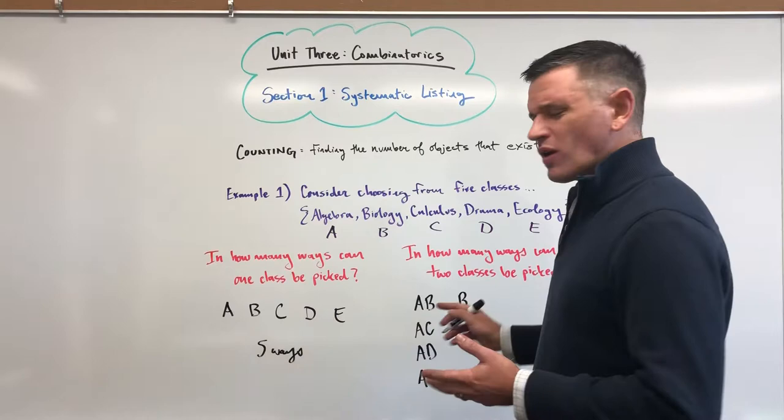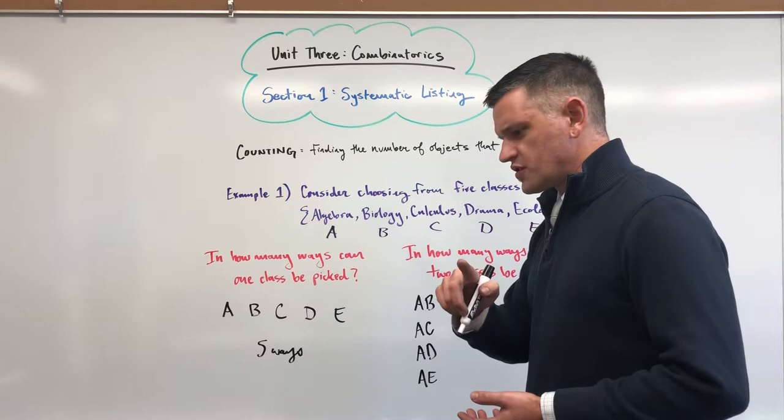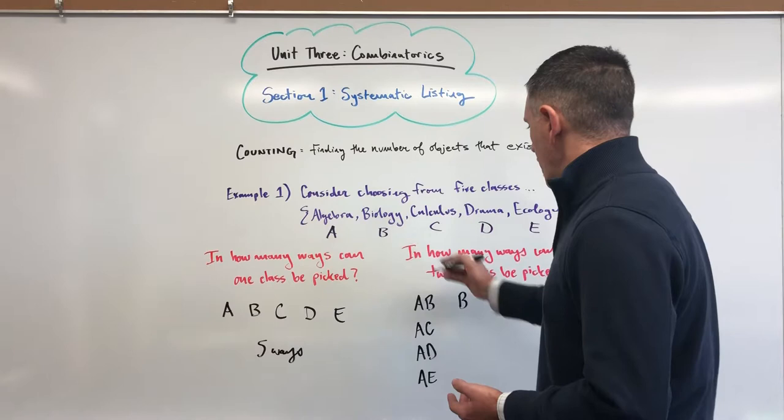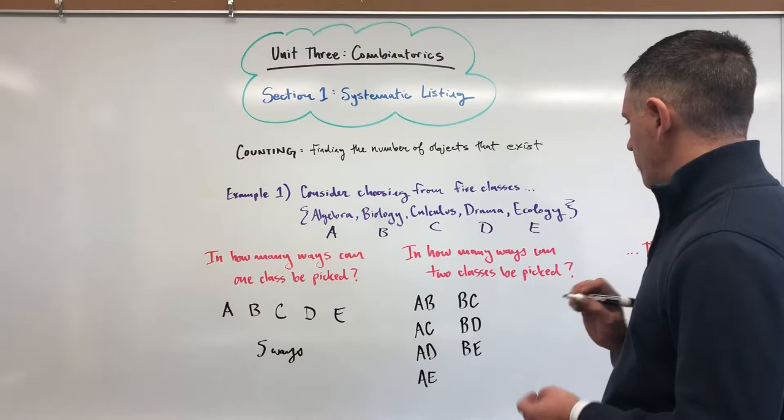It won't always be, so we're going to have to be careful. Also, I don't want to make a selection like BB. I'm not going to take Biology twice unless I fail, but that's not going to be part of this conversation either. So I'm thinking about the order doesn't matter and the repetition is not allowed. These are going to be two key things that are going to be thematic for the rest of the semester.